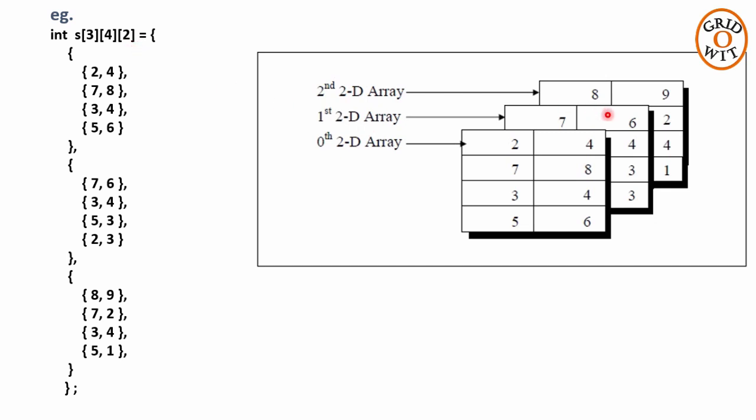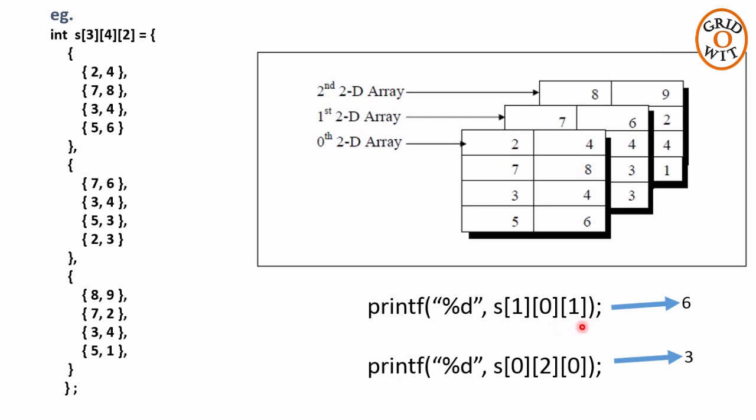Now suppose you want to print this value 6. So first of all, you have to tell in which 2D array this 6 value is and then in which row and after that in which column. This value 6 is in 1st 2D array, in 0th row and in 1st column. So you have to write s[1][0][1] in square brackets. This will print the value 6. Similarly, this value 3 is in 0th 2D array, 2nd row and 0th column. So you have to write s[0][2][0]. This will print the value 3.